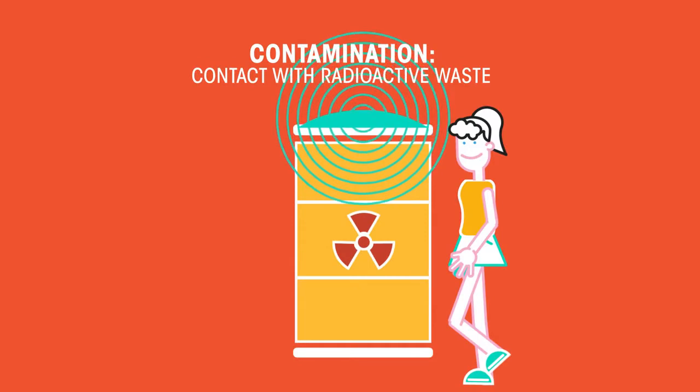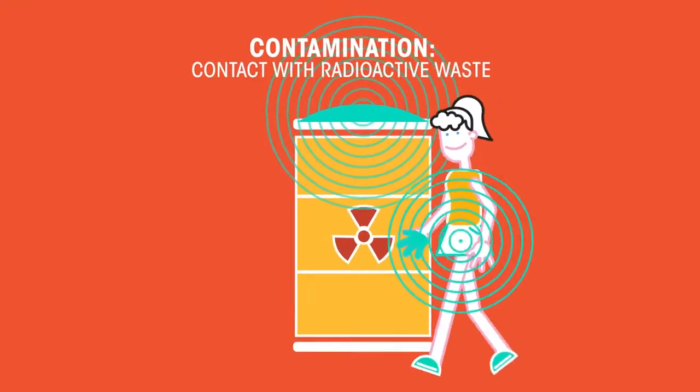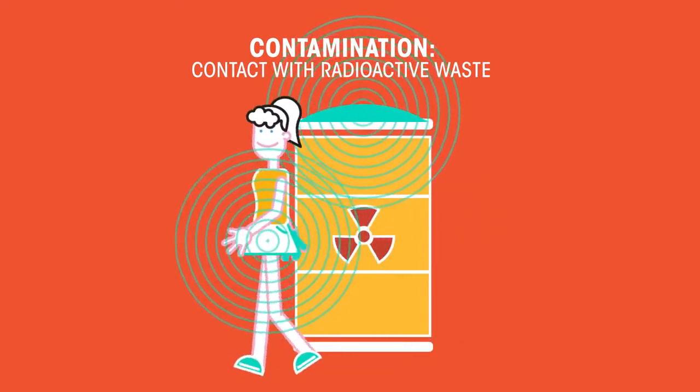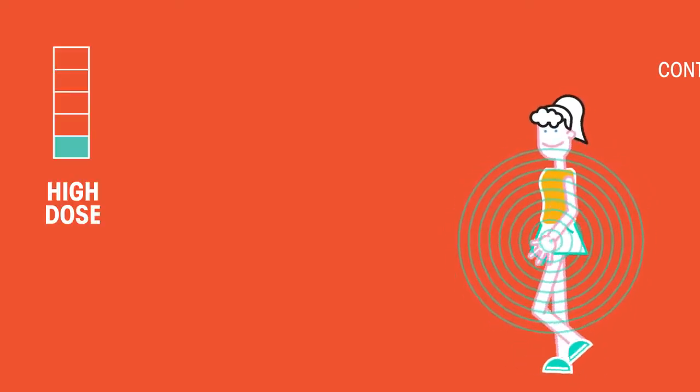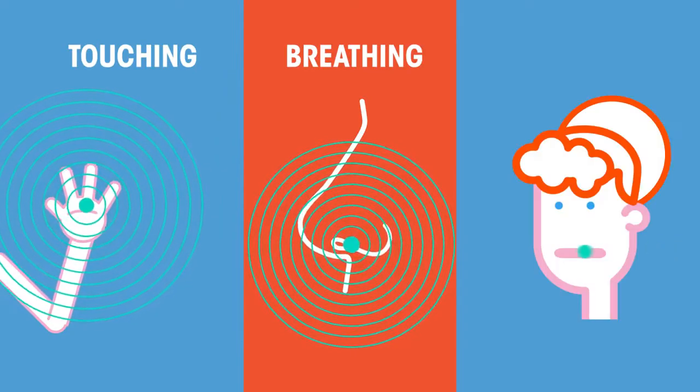Contamination is when a person actually comes into contact with the radioactive wastes. The person takes the radioactive source away with them and so are exposed for a longer period of time and consequently have a higher dose which can lead to more damage. Contamination can happen in a variety of ways, from picking up a source to breathing it in and to ingesting it.